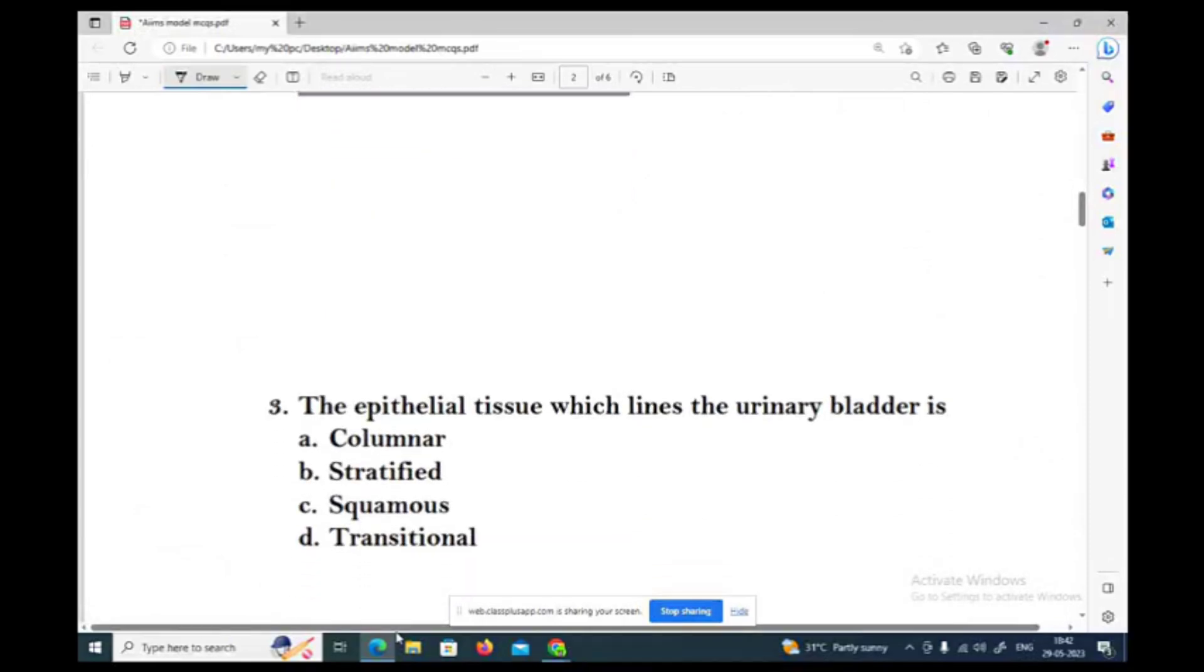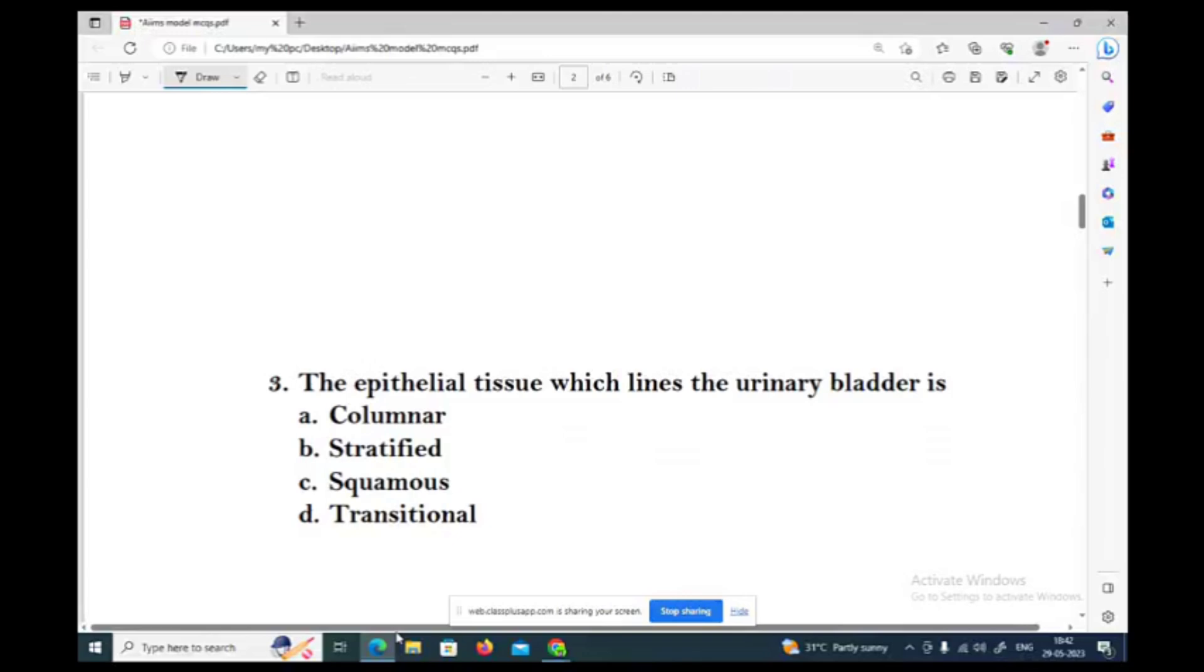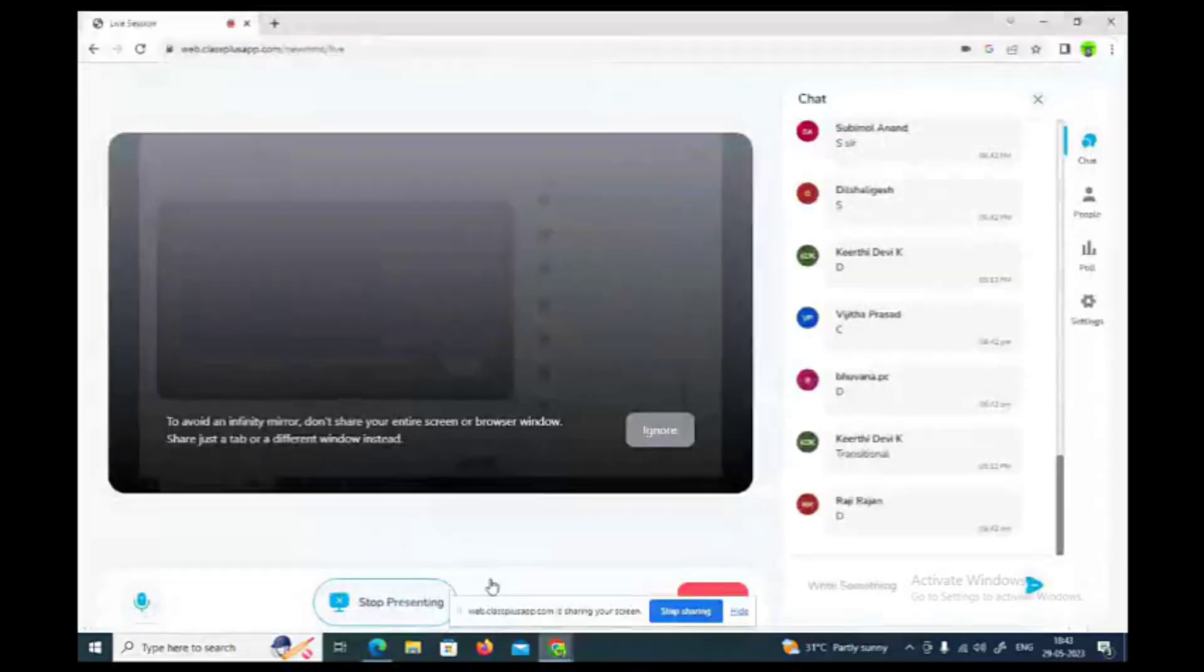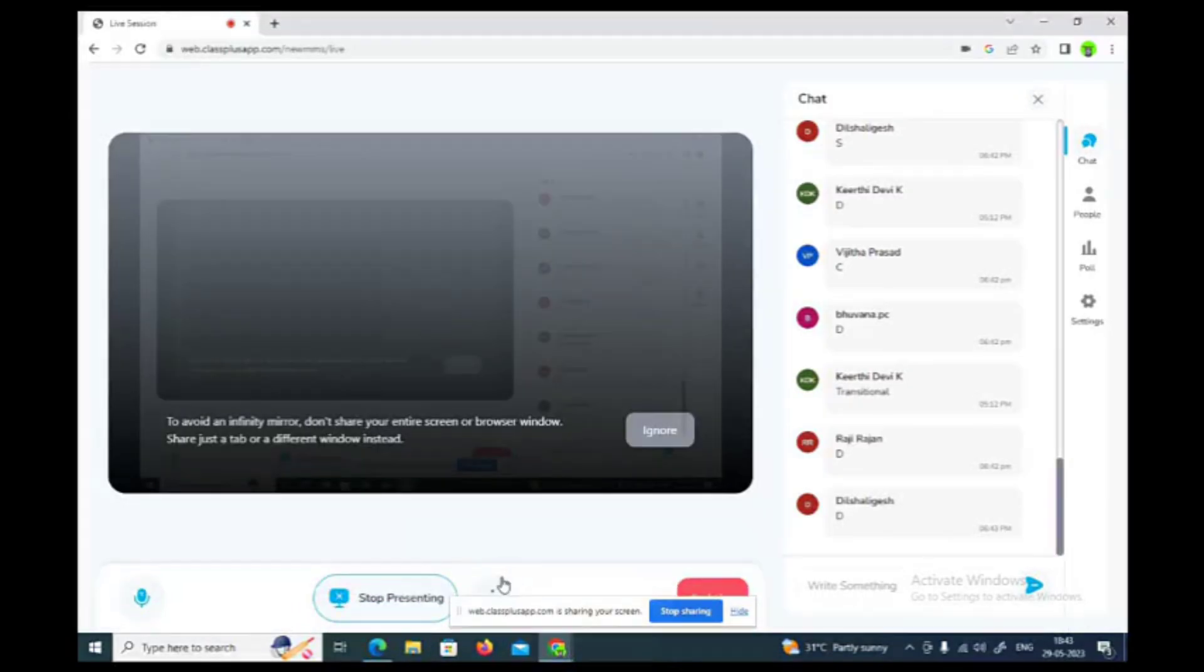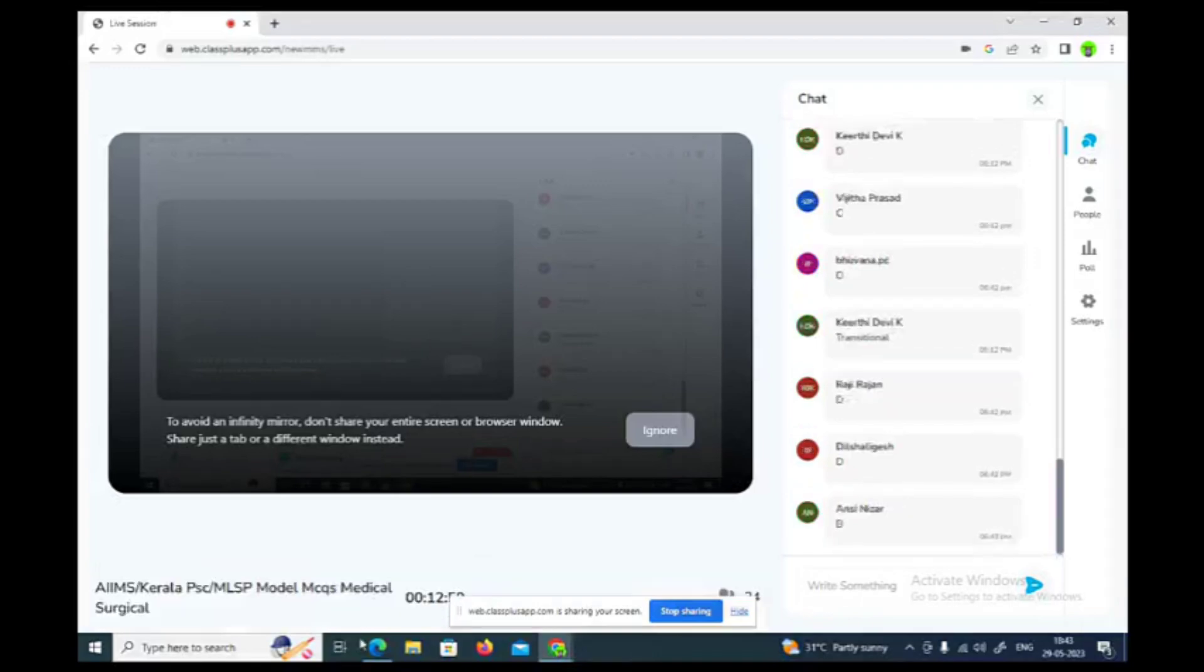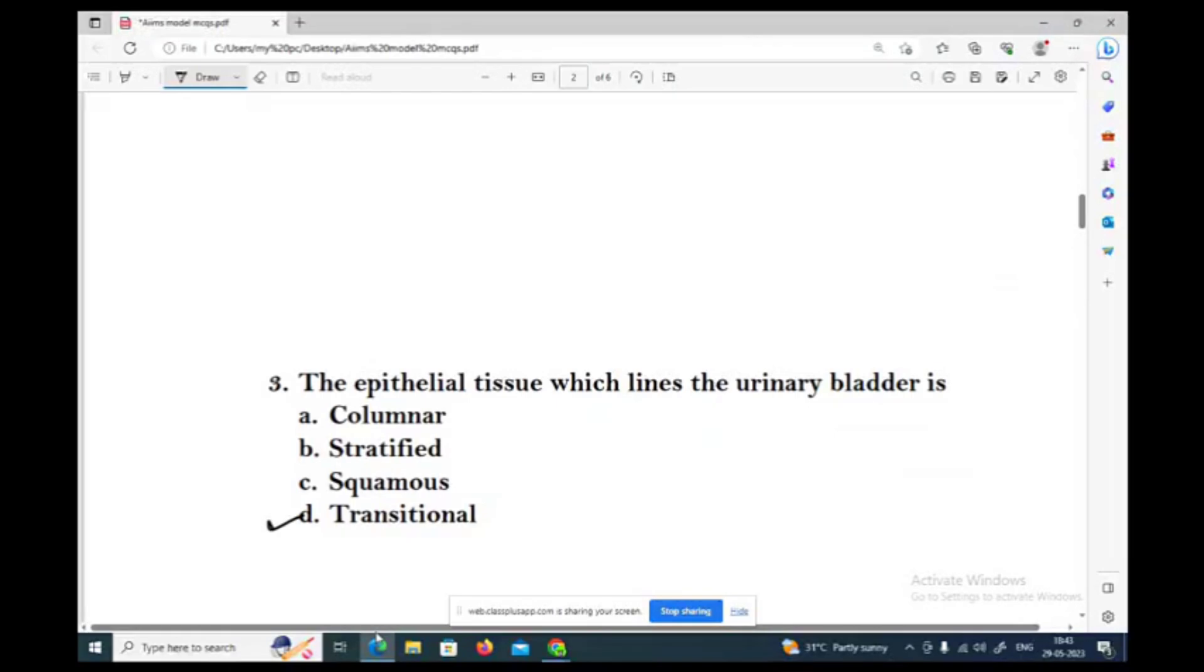Next question: The epithelial tissue which lines the urinary bladder is: Options: columnar, stratified squamous, transitional. The correct answer is option D, transitional epithelial tissue.